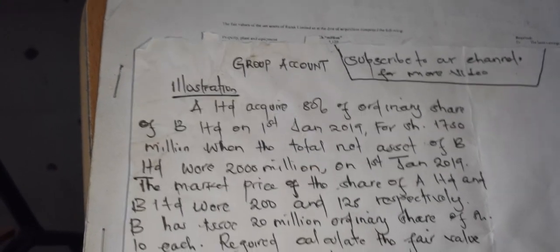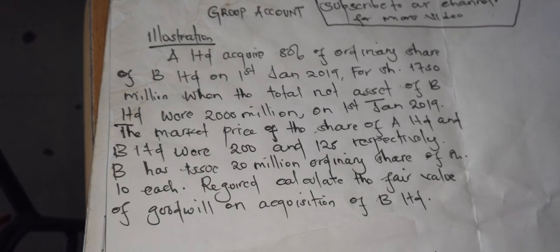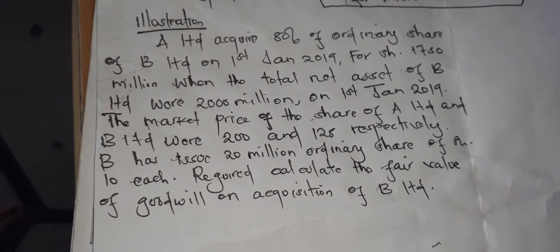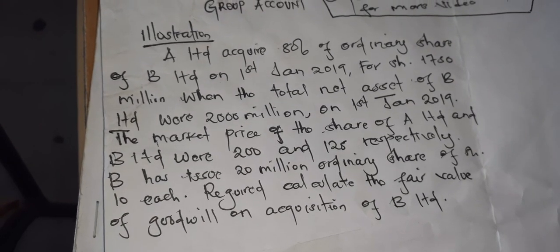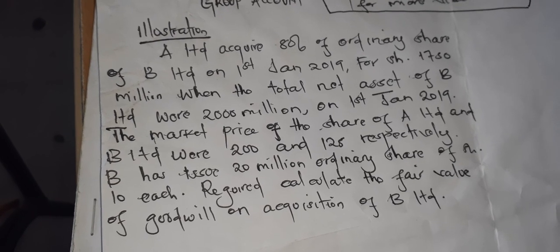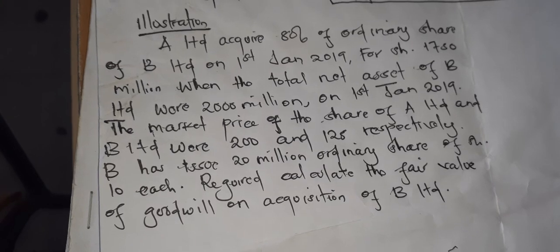So today we are going to look at the group's account and how to determine the goodwill. You have to begin the determination of the goodwill. Here is an illustration. A Limited acquire 80% of the ordinary share of B Limited on 1st January 2019.